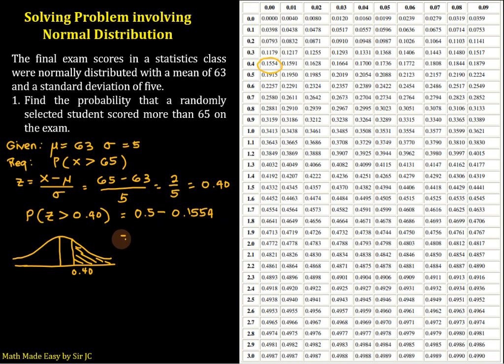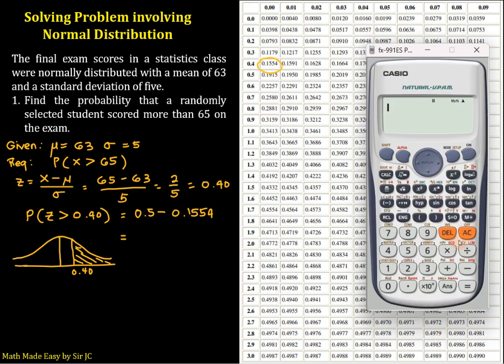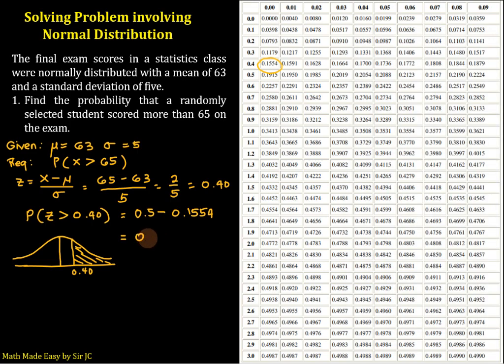Therefore, that is equivalent to 0.5 minus 0.1554, which equals 0.3446. If you want, you can express this as a percentage, that is 34.46%. So the probability that a randomly selected student scored more than 65 is 34.46%.